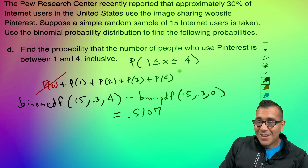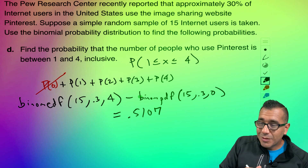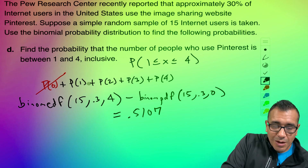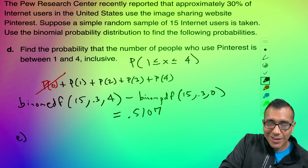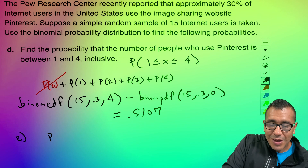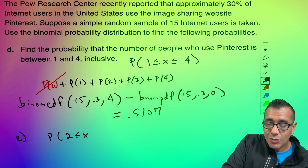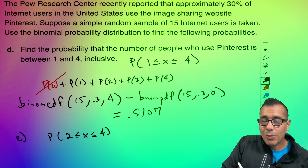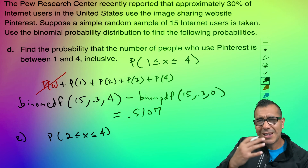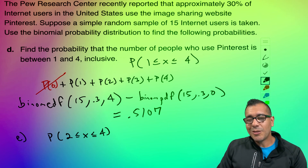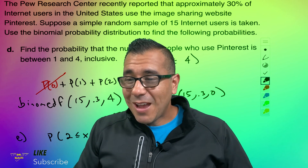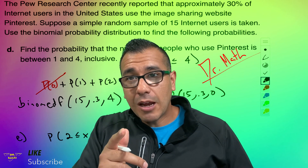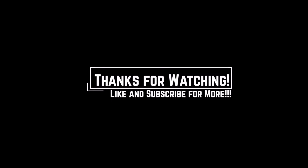Hopefully this makes sense. Before you leave, we want you to find the probability that X is between two and four — share your answers below and we'll reply. If you enjoyed this video, Mathletes, make sure to like, subscribe, and share. We'll see you next time in Dr. Math Studios. Peace, bye!